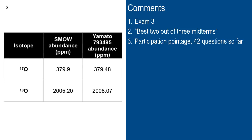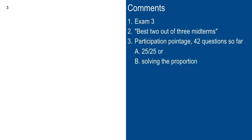Right now, as of last Thursday — our last regular lecture — there were 42 questions. I uploaded a roundup of 39 questions last Wednesday, but then on Thursday last week we had three more, so right now the total is 42. You either get 25 out of 25 if you've answered 85% of those, or you have to solve the proportion. Full pointage: 85% of 42 is 35.7 questions.